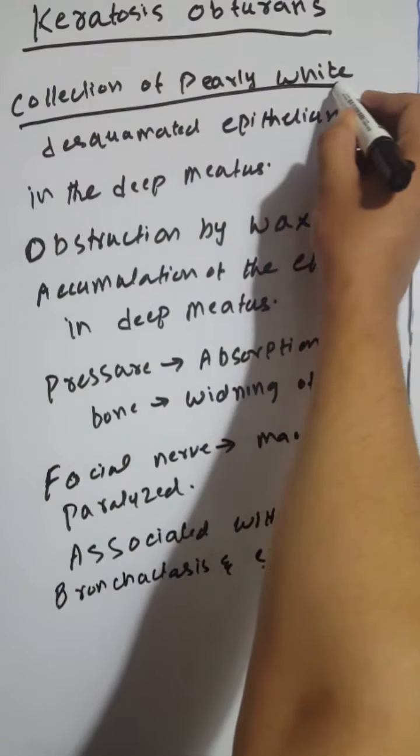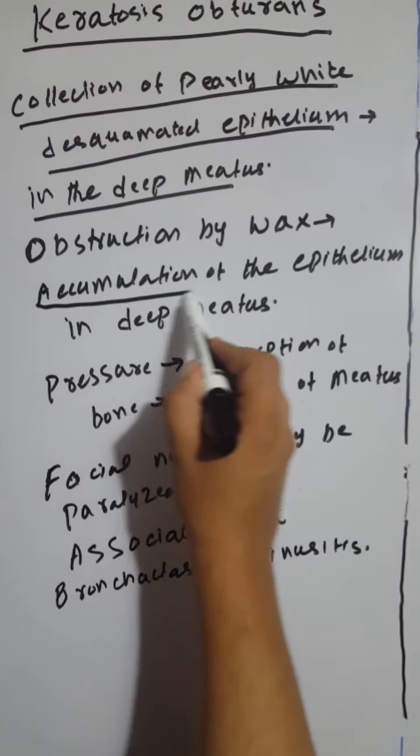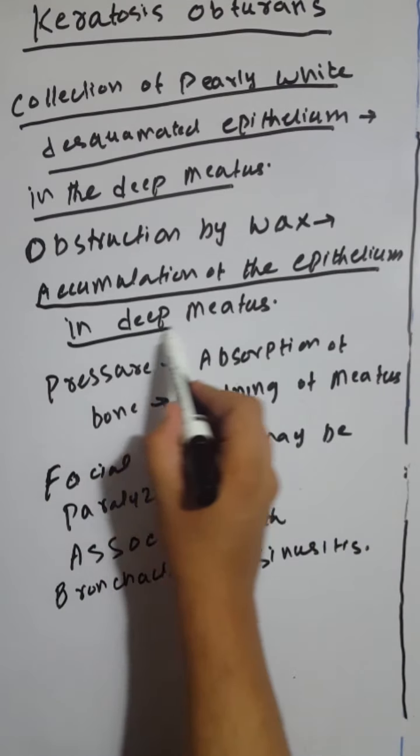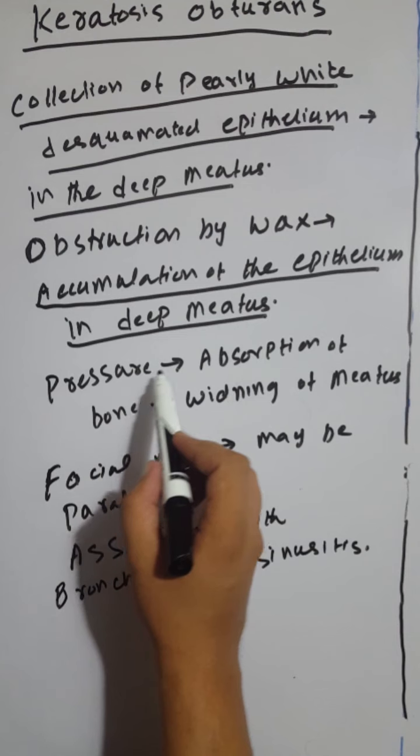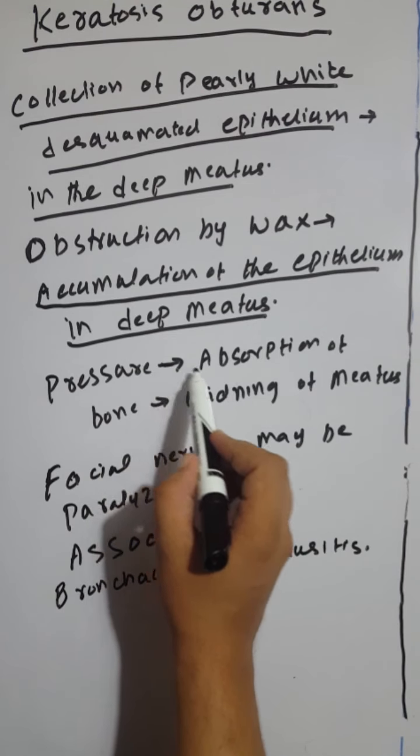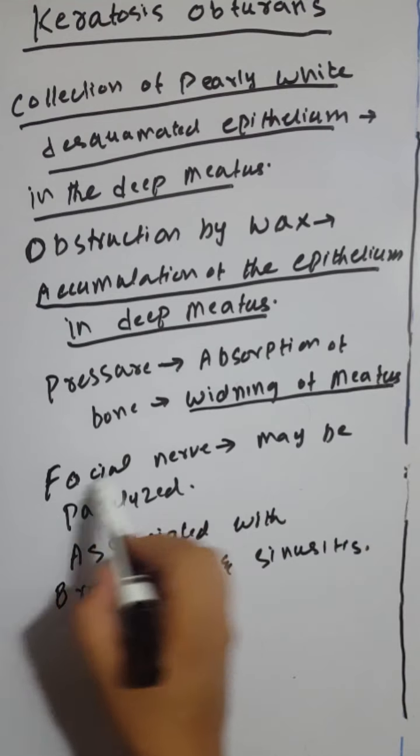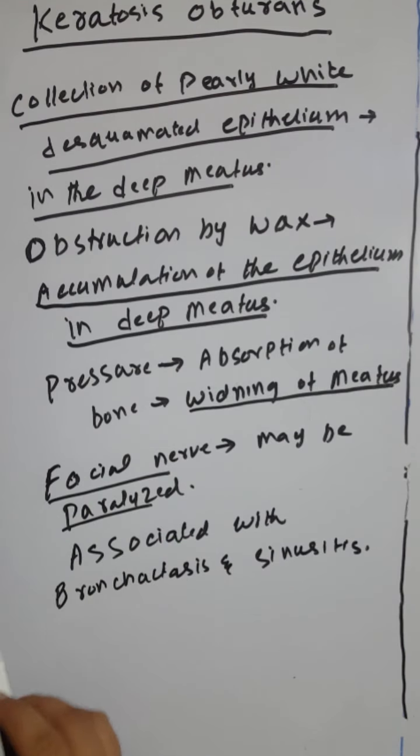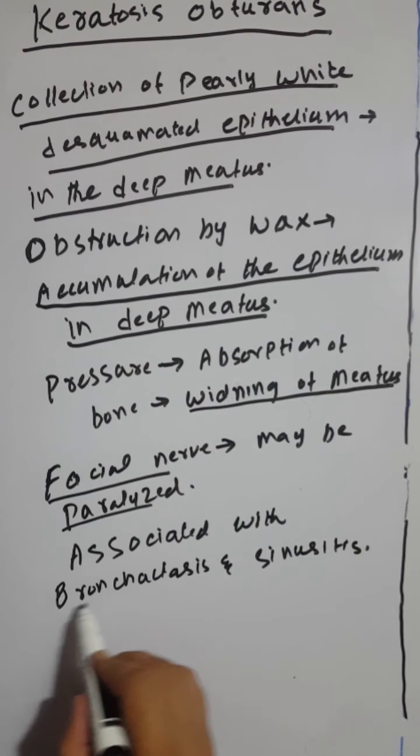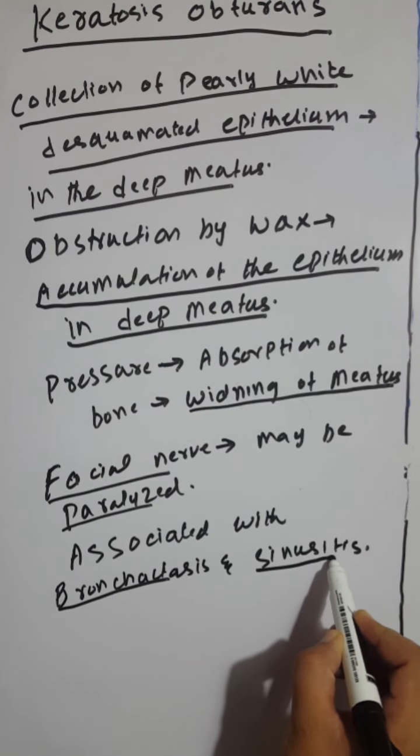The obstruction by wax may cause the accumulation of this epithelium in the deep meatus. Pressure effects cause absorption of bone and widening of the meatus. Facial nerves may be paralyzed. They are often associated with bronchitis and sinusitis.